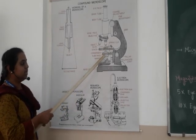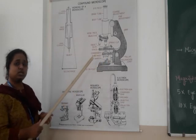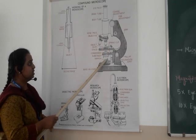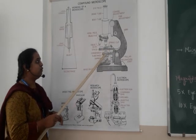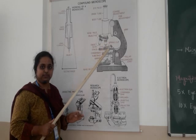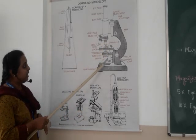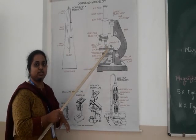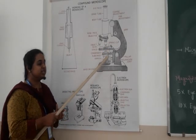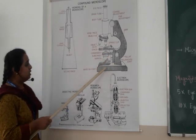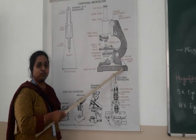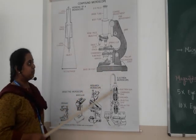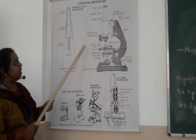Below the stage, you can find the condenser, also termed as illuminator. The condenser consists of different-sized holes, and by adjusting these holes, we can control the amount of light passing into the stage. The base or foot of the microscope provides the foundation. This completes the diagram of the compound microscope.